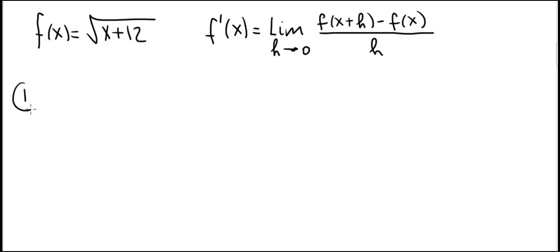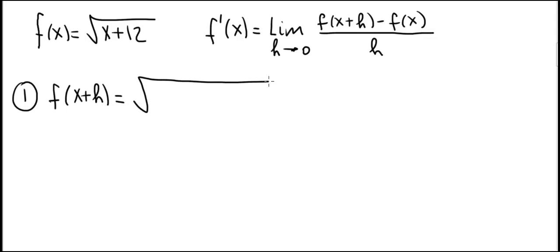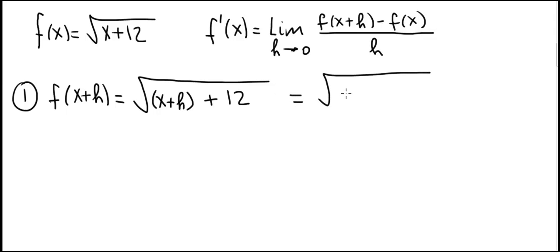We'll do this in four steps. The first step is to compute f of x plus h. We're going to draw the square root symbol, put a pair of parentheses plus 12, and put x plus h in those parentheses. This simplifies to square root of x plus h plus 12. There's nothing more we can do, so let's go to step number two.